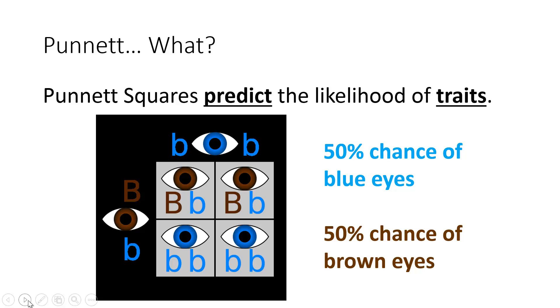Punnett Squares predict the likelihood of traits. In the picture that you see here, this is an example of a Punnett Square. This whole thing is what geneticists or people who study heredity use to tell what the likelihood is that a child would have a certain hair color, eye color, or height. From the Punnett Square, I could see that this person would have a 50% chance of having blue eyes and a 50% chance of having brown eyes. By the end of the lesson today, you will be able to predict the likelihood of traits of offspring of two parents.